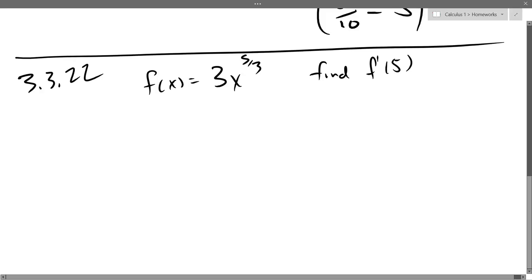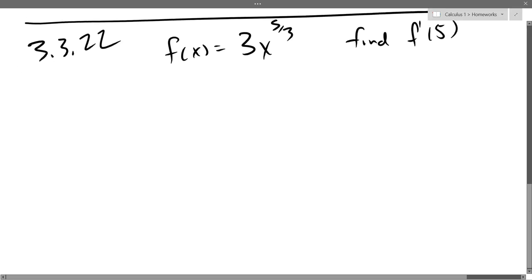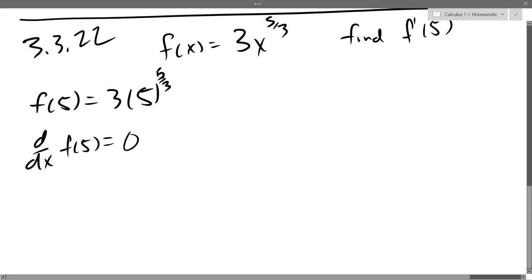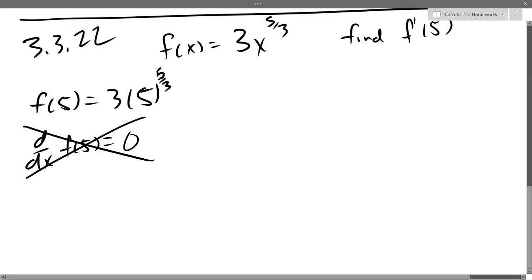Let's do one homework problem. This is: find the derivative and plug in five. If I plug in five first, I just get f of five — three times five to the five-thirds — so this is a number. What is the derivative of a number? Zero. So if you plug in your number first and then take the derivative, you're going to get zero. So derivative first, plug in second. Plugging in five first is useless; that won't help me get the derivative.